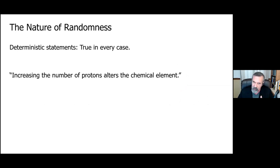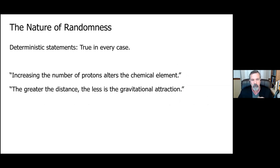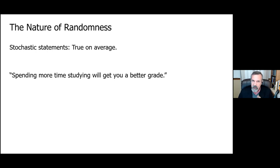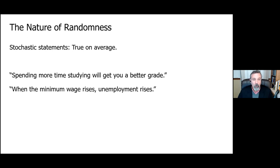When we study science in school, we study what we think of as the hard sciences — physics, chemistry, and biology — because the measurements in these sciences are deterministic. Things like increasing the number of protons alters the chemical element, or applying force to an object causes it to accelerate — these happen every single time. But in the soft sciences, such as economics, the truths aren't deterministic, they're stochastic. Spending more time studying will get you a better grade — generally speaking, that's correct, but not in every single instance.